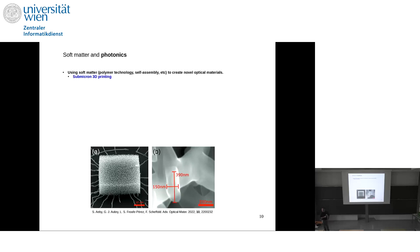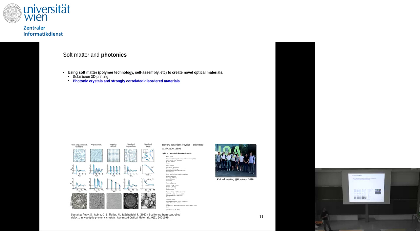For instance, we can directly 3D print in the submicron size regime very complex structures with a given optical functionality. It's quite literally a 3D printer, a bit expensive, and then you need some chemical post-processing. Another approach is to use structures found in soft matter to get different photonic properties — from strongly correlated, if not fully ordered like photonic crystals, to disordered but correlated materials. This is a hot topic in the photonics and soft matter community.